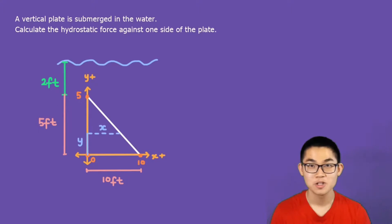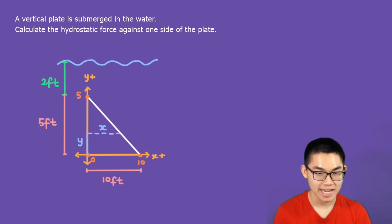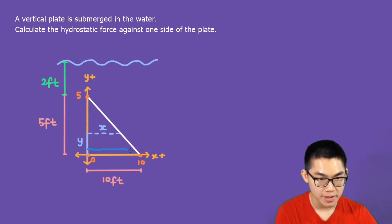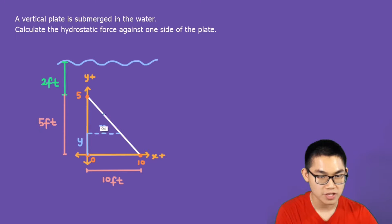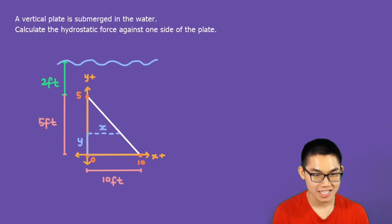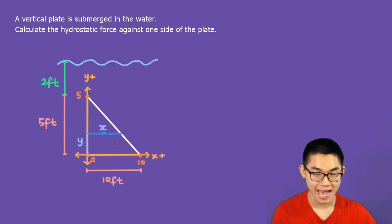To calculate the hydrostatic force, we calculate the force of each horizontal stripe acting on the triangle — this stripe, then this one, then this one — all the way to the very top. Then we add all of those forces together to get the total hydrostatic force. I'm going to draw a representative stripe at height y from the center.